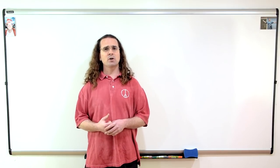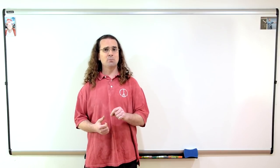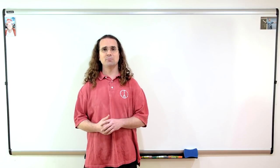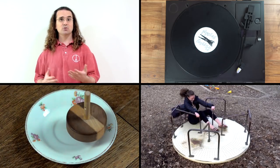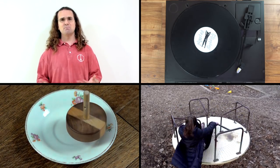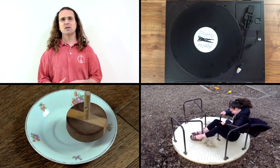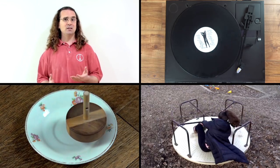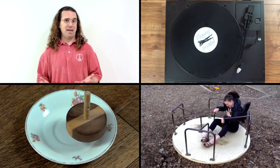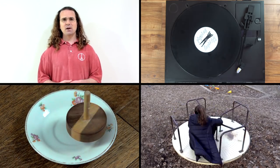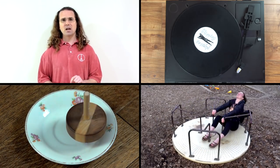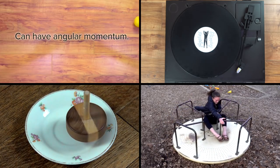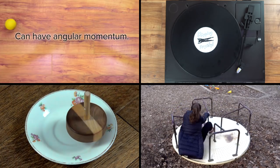Good morning. We have already worked with the angular momentum of rotating rigid objects with shape like records, spinning tops, and merry-go-rounds. Because those objects are rotating, it is probably clear they have angular momentum. Today, we are going to show that an object which is moving in a straight line can also have angular momentum.